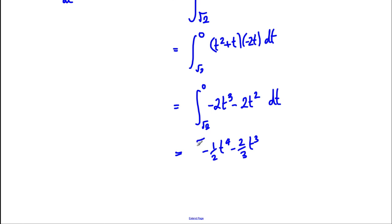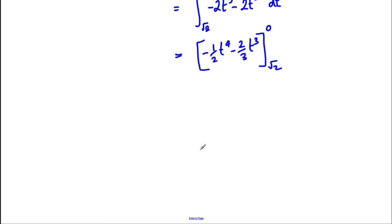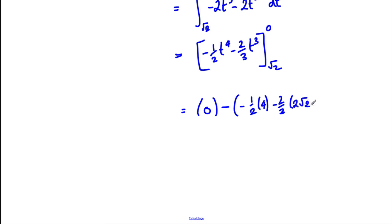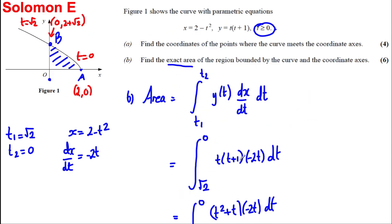Integrating gives [−½t⁴ − ⅔t³] evaluated between 0 and √2. Substituting t = 0 gives 0. Substituting t = √2: (√2)⁴ = 4 and (√2)³ = 2√2, so we get 0 − (−½·4 − ⅔·2√2) = 2 + 4√2/3. The exact area is 2 + (4/3)√2, for six marks.